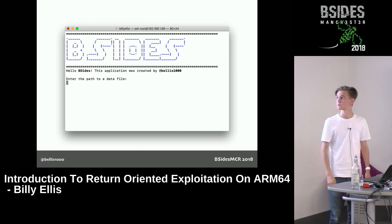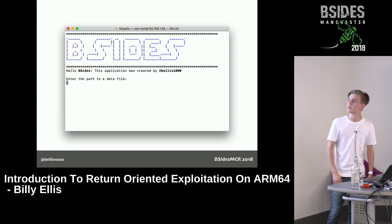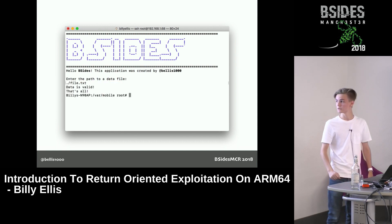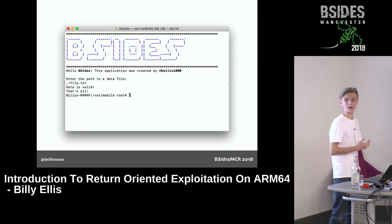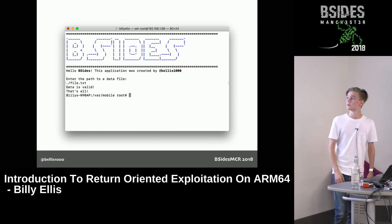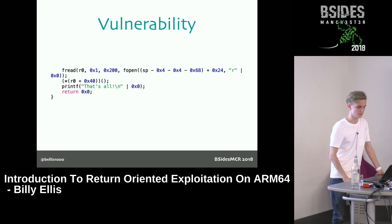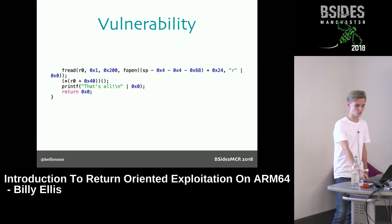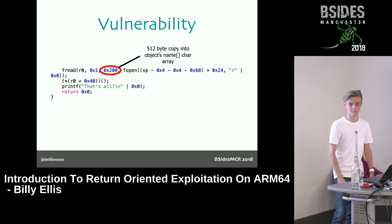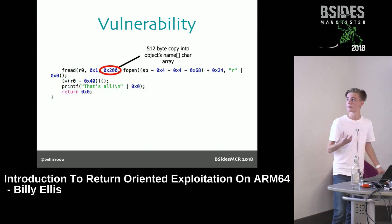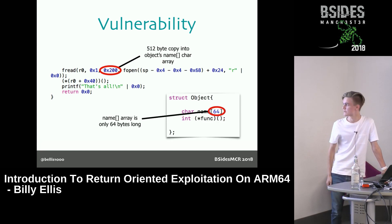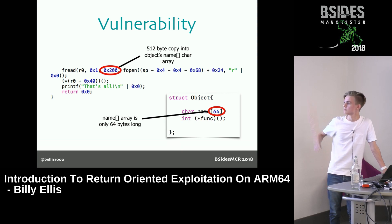Here's a screenshot of the binary when you execute it: it gives a BSides banner at the top, then asks you to enter the path to a file containing data. You enter a filename, it reads in all the data from the file, prints out 'data is valid,' then quits. The heap overflow occurs when it reads the data from the file. This snippet from Hopper disassembler shows the vulnerable part — a call to fread that reads in 512 bytes from the user-specified file and stores it into a 64-byte char array. So there's a blatant buffer overflow.